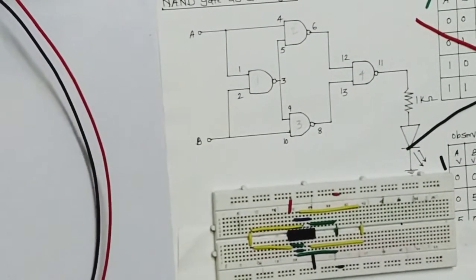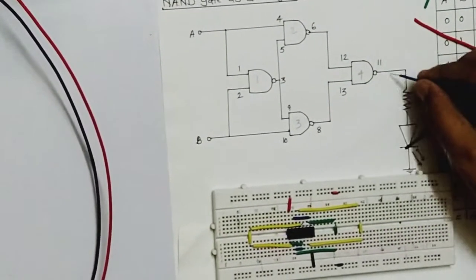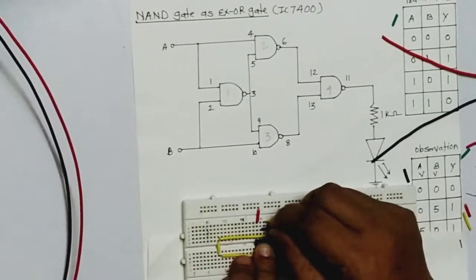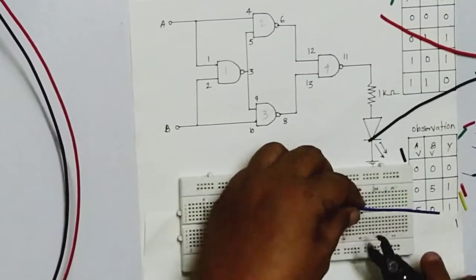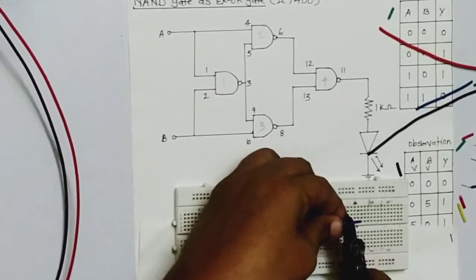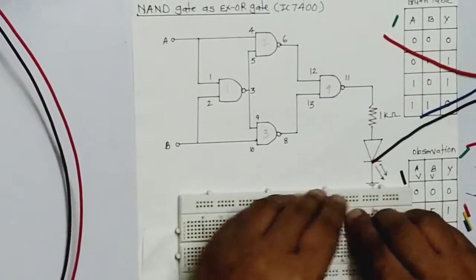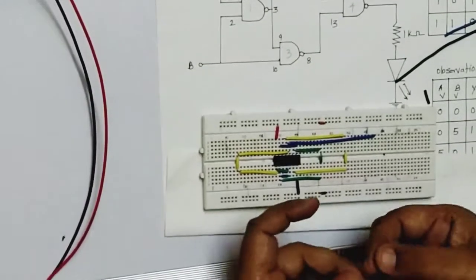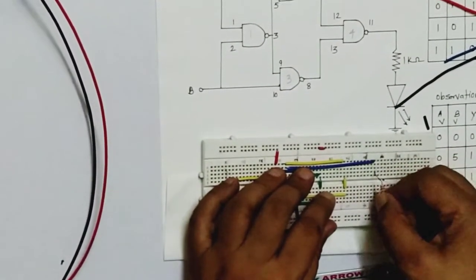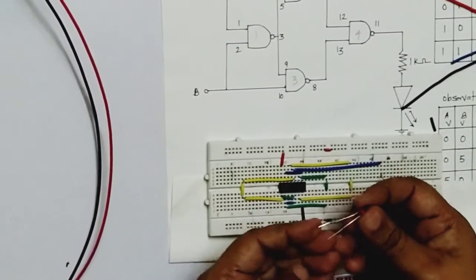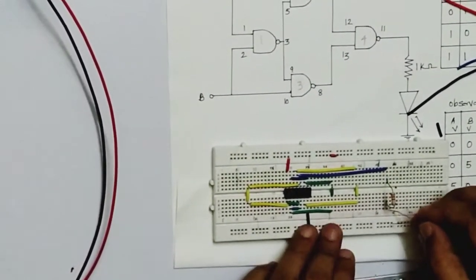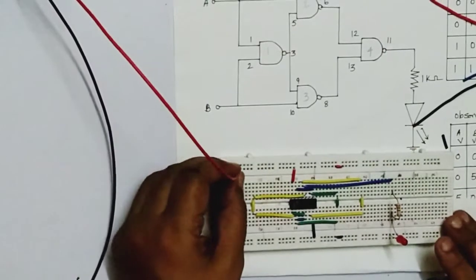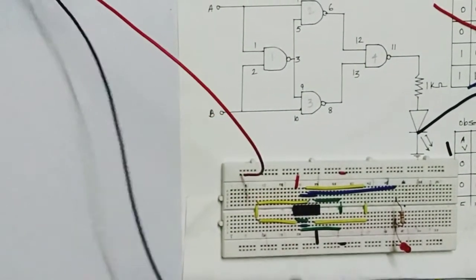The blue color wire at pin number 11 is the output of the circuit. Now connect here one resistor and one LED. The resistor is 330 ohm, connected in series. The LED is red color — this is the anode and this is the cathode. Cut point going down properly. We are connecting the power supply — positive here and negative here.